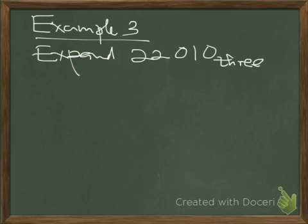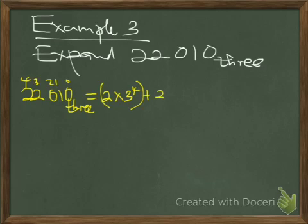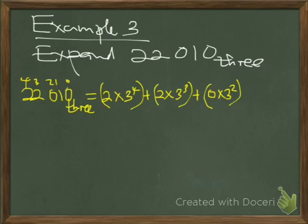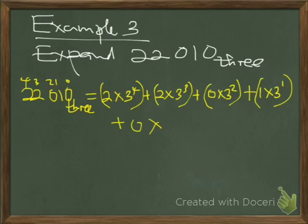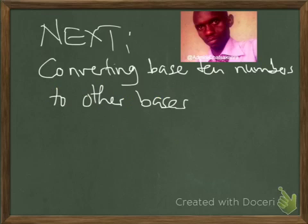Let's expand 222010 in base 3. Positions are 0, 1, 2, 3, 4. Therefore it equals 2 times 3 to the power 4, plus 2 times 3 to the power 3, plus 0 times 3 to the power 2, plus 1 times 3 to the power 1, plus 0 times 3 to the power 0. We are not expressing further. Note that 2 times 3 to the power 4 is 81, which is why in our previous lesson we said these are 81s.